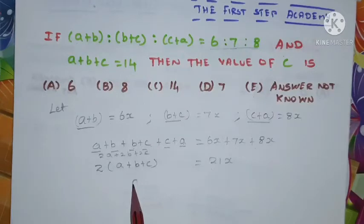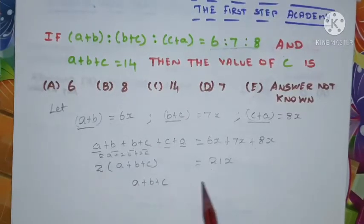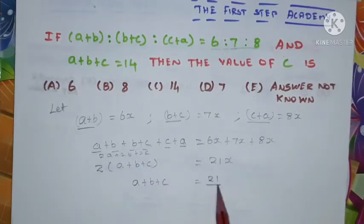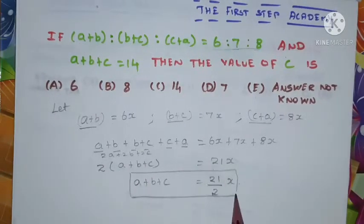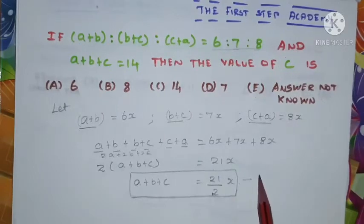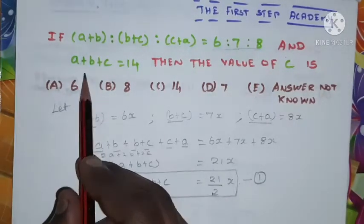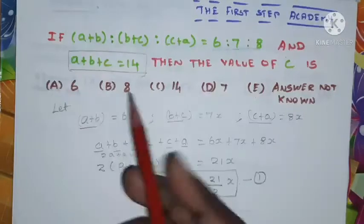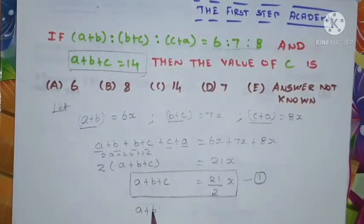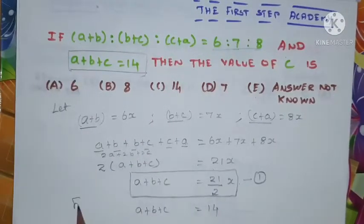Bringing the 2 to the right-hand side: a+b+c = 21x/2. I'll call this equation 1. From the question, they have given us a+b+c = 14 — I'll call this equation 2.